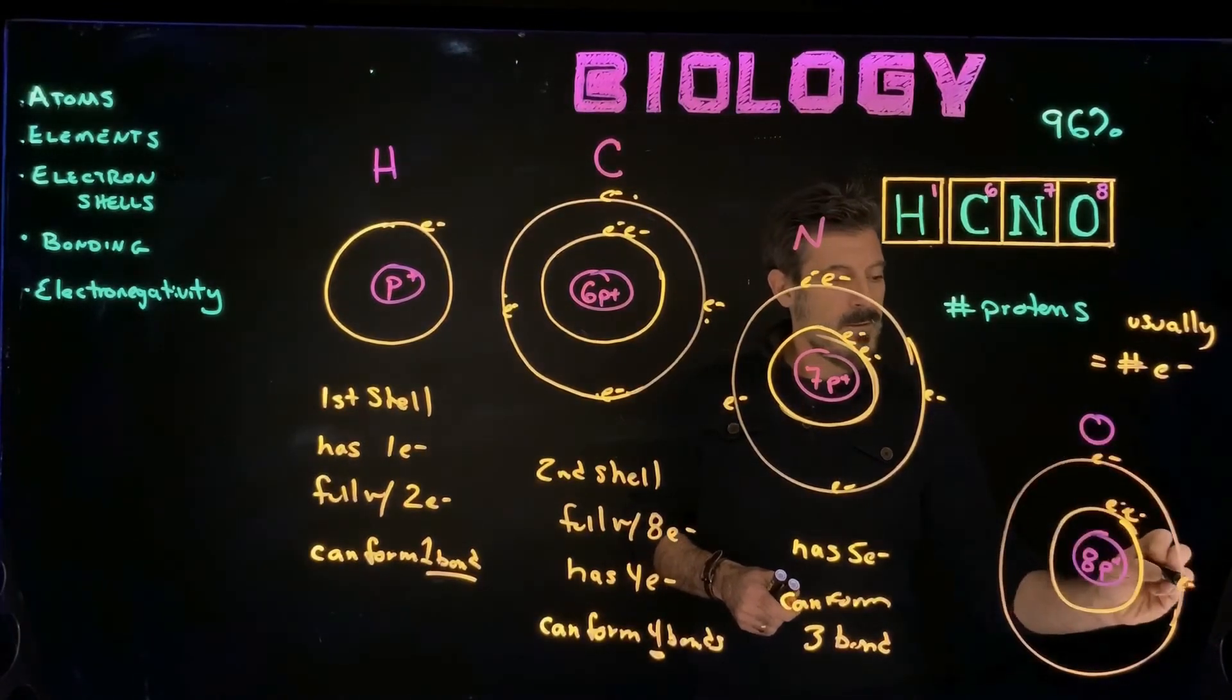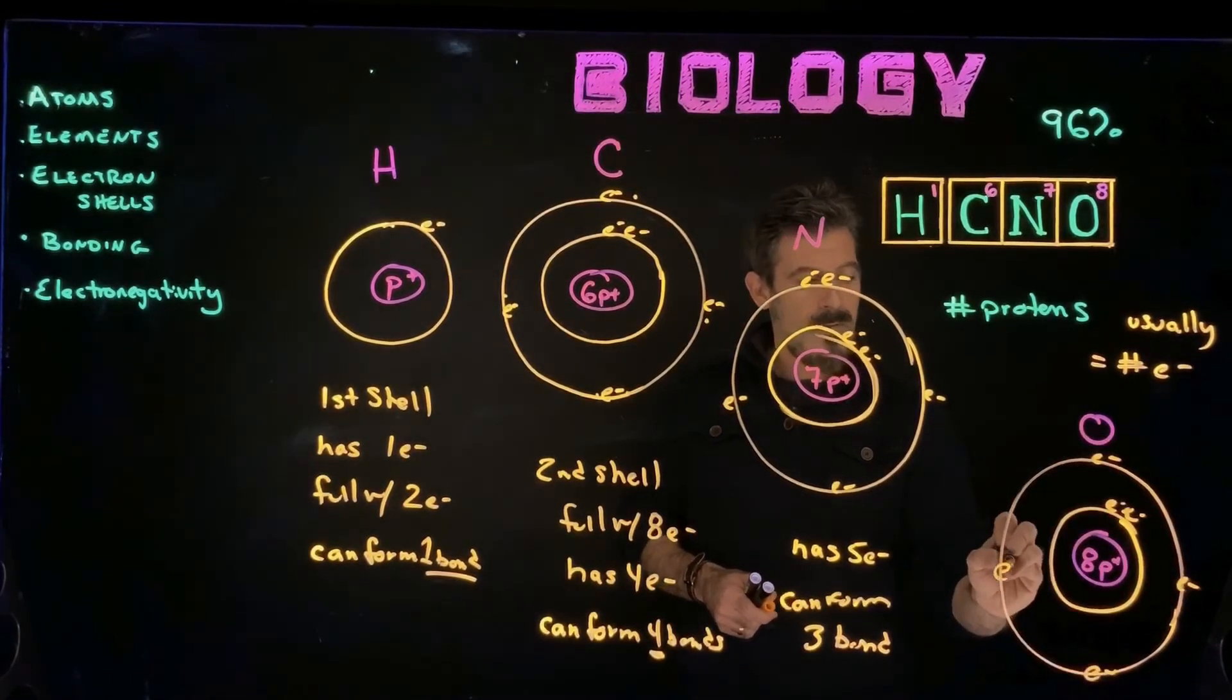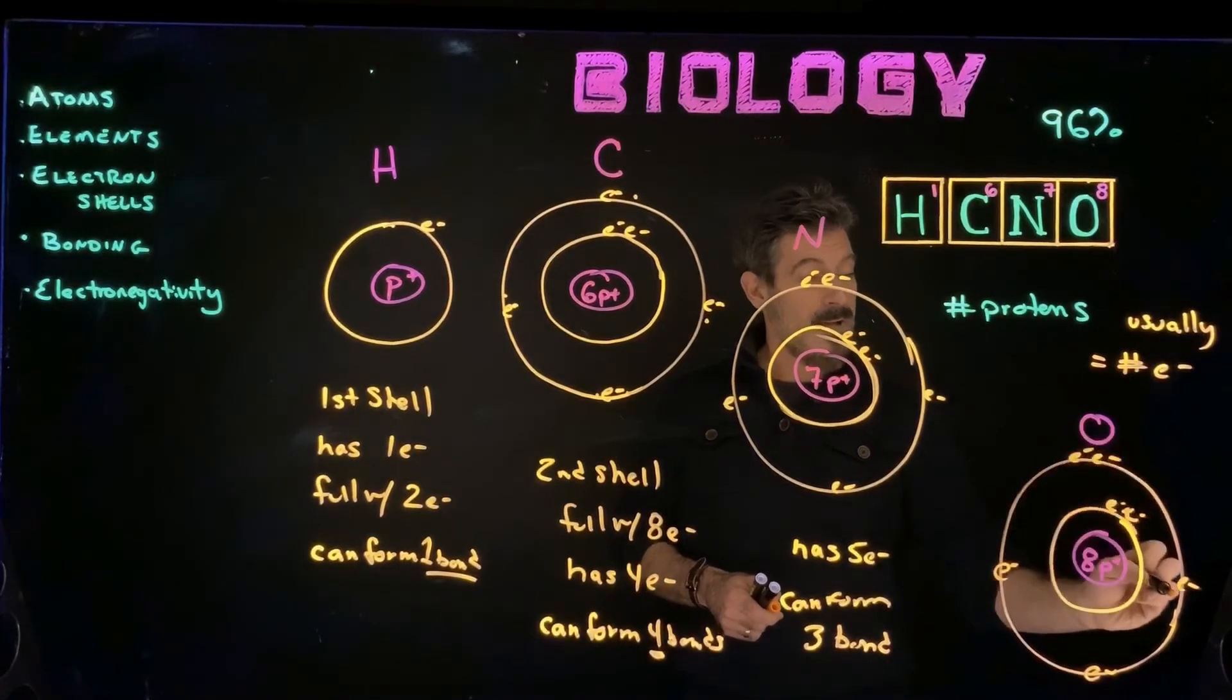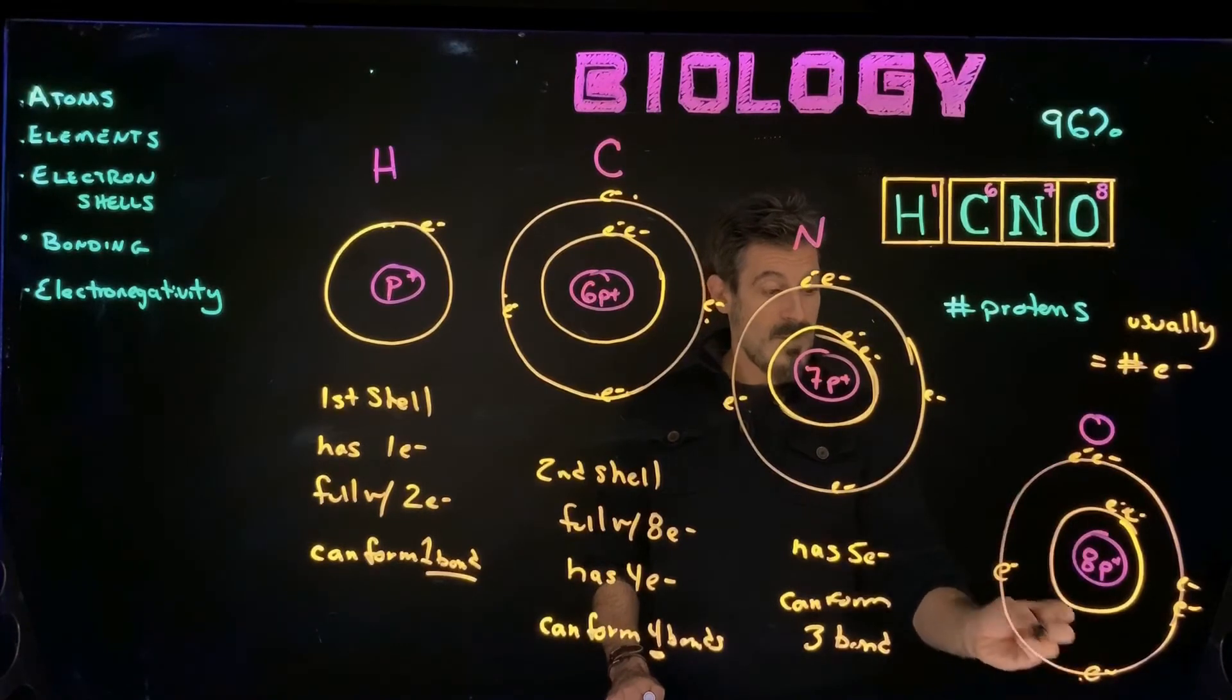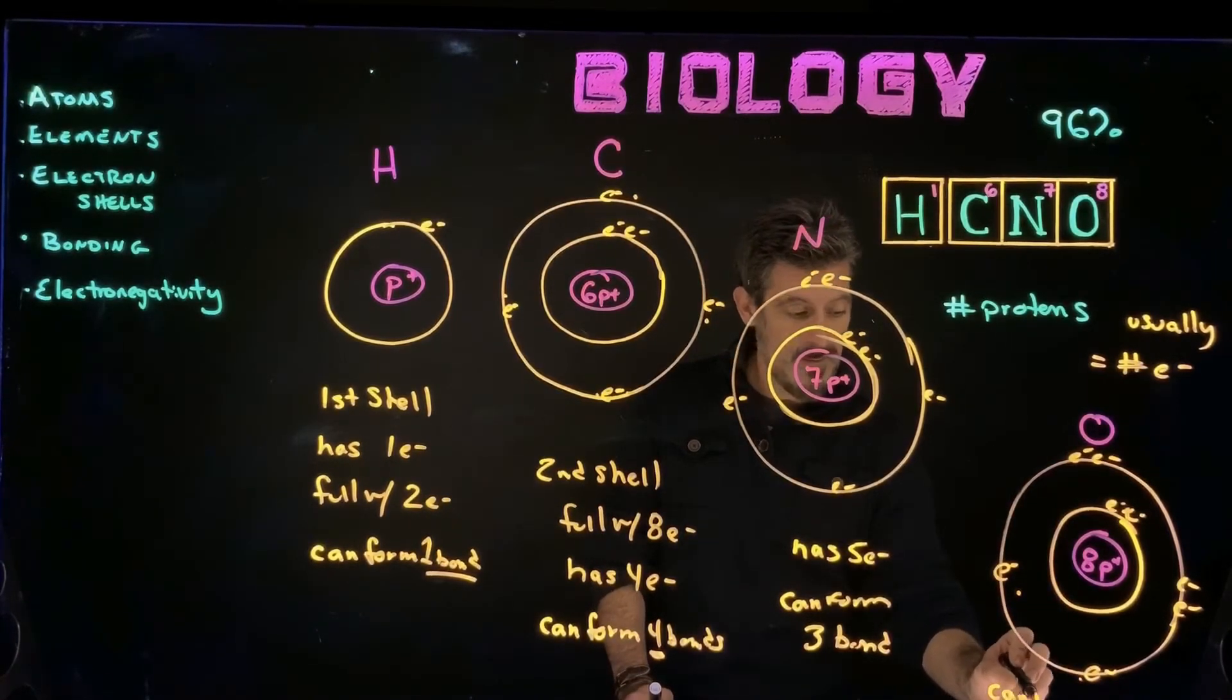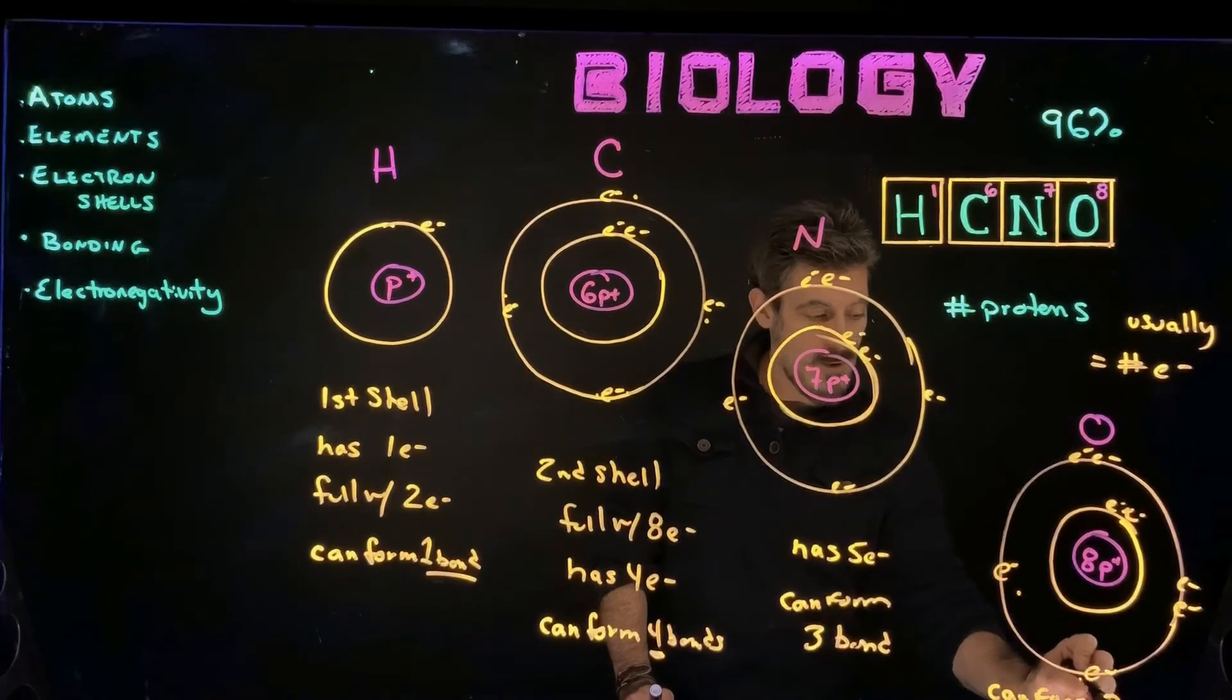And then one, two, three, four, and then five, six electrons in the outer shell. So it needs two more, so it can form two bonds.